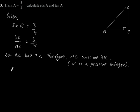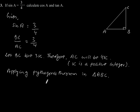Now applying Pythagoras theorem in triangle ABC, we will get AC square is equal to AB square plus BC square.